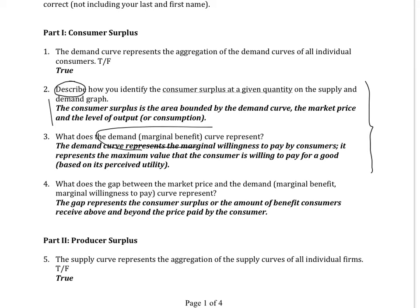More importantly is the concept: what does the marginal benefit curve represent? This gets at the idea of marginal willingness to pay — representing the maximum value the consumer is willing to pay for a good. You're going to incorporate this kind of language into an explanation; this demonstrates a clear understanding of what the curve is. My general concern with students is that they tend to just identify a title, but the explain assessments require you to broaden your capacity to discuss and explain these things.